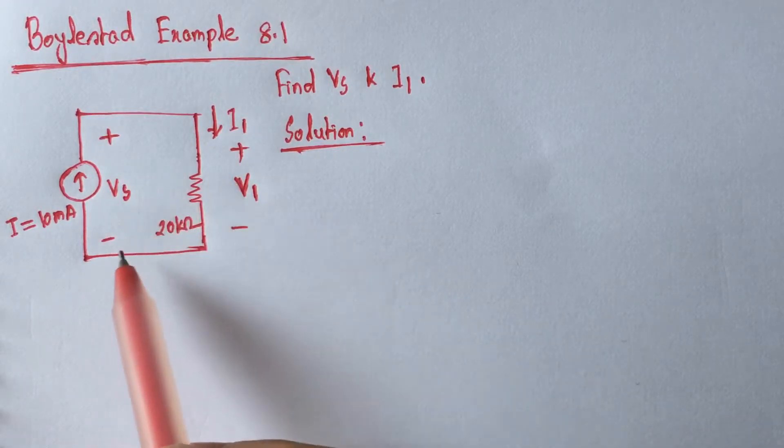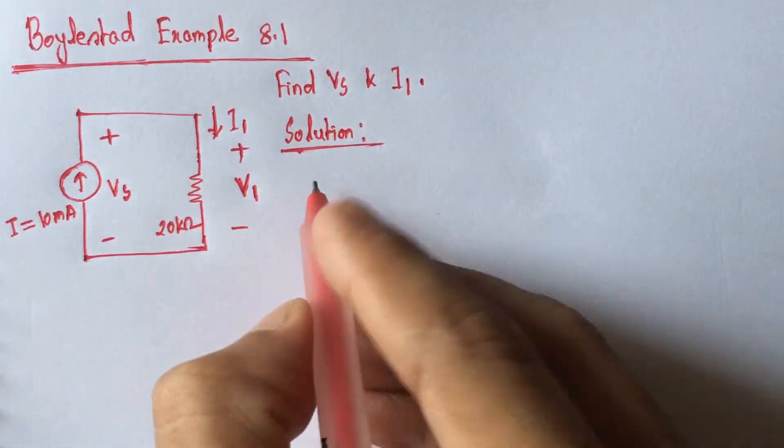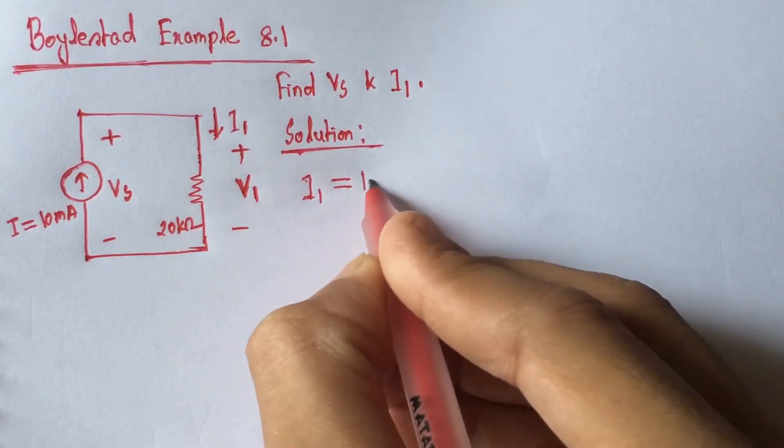Since this is a series circuit, I1 is equal to 10 mA. So we find I1 is equal to 10 mA.